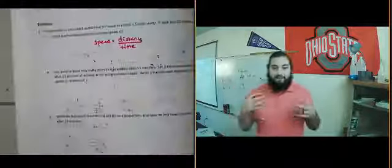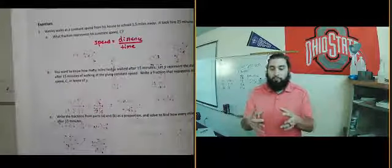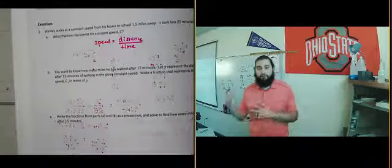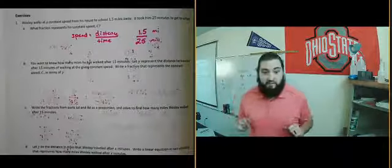And so remember speed we said was distance divided by time. And so we're going to use that same formula, we're going to use that same basis to create our proportion and then with that proportion answer some questions related to this problem in Wesley walking to school. So his distance is 1.5 and his time it took him to get there was 25 minutes. I'm going to make sure to include your units as you're doing this just so that way you're clear on what number means what. 1.5 miles over 25 minutes. That's it for number 1.